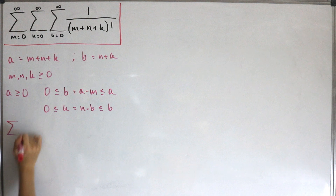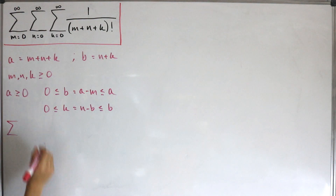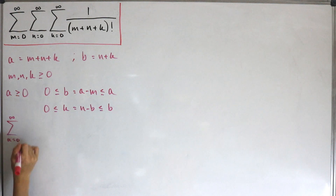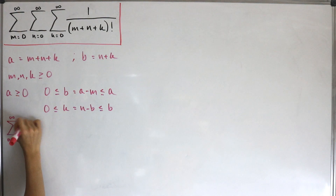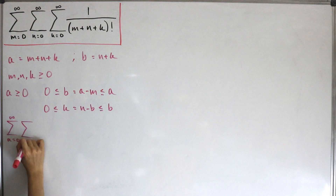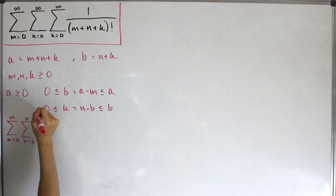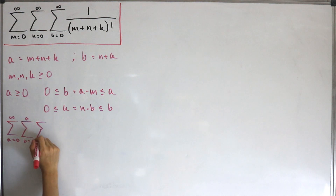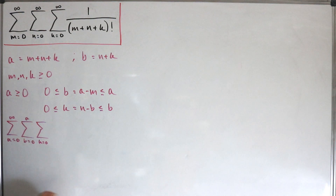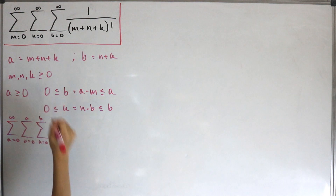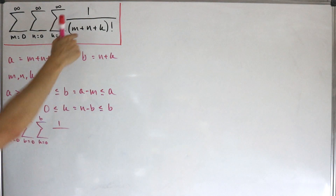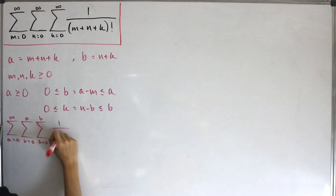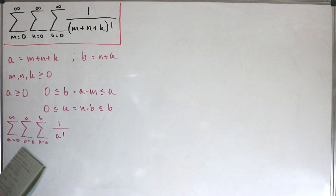With those bounds, we can rewrite our new sum as follows: the first sigma ranges from a equals zero to infinity; the next is a finite sum ranging from b equals zero up to a; and the last sigma has k ranging from zero up to b — all of one divided by a factorial, since a equals m plus n plus k.